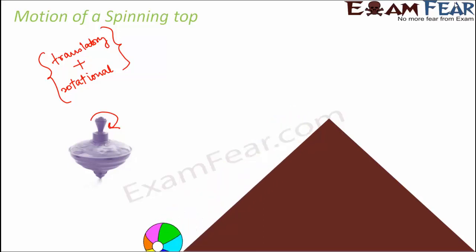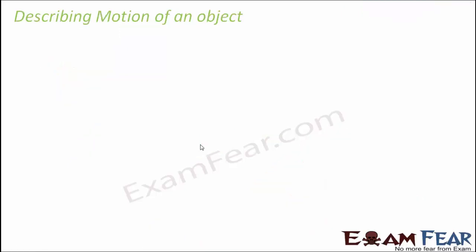Consider a ball moving down a slope — the ball is actually rolling as it moves. This type of motion is termed rolling motion. Sometimes the ball rolls and also slips at the same time, so we say the ball is rolling with slipping. These are complicated forms of motion that you will learn in detail in Class 11.